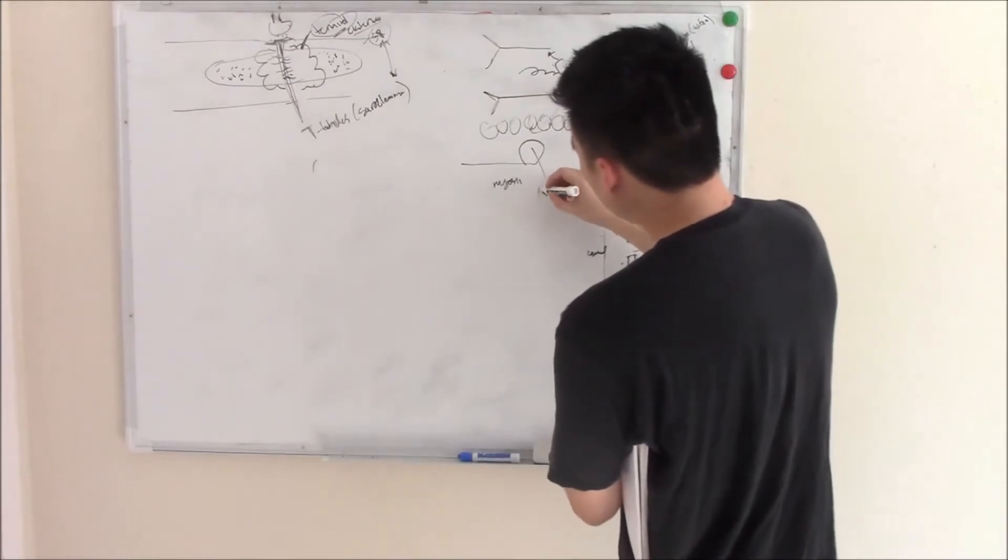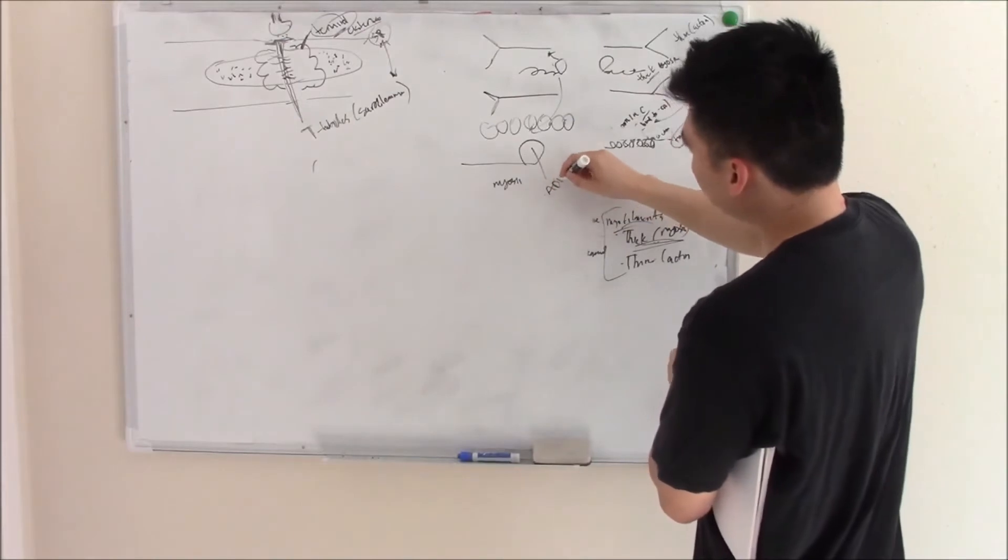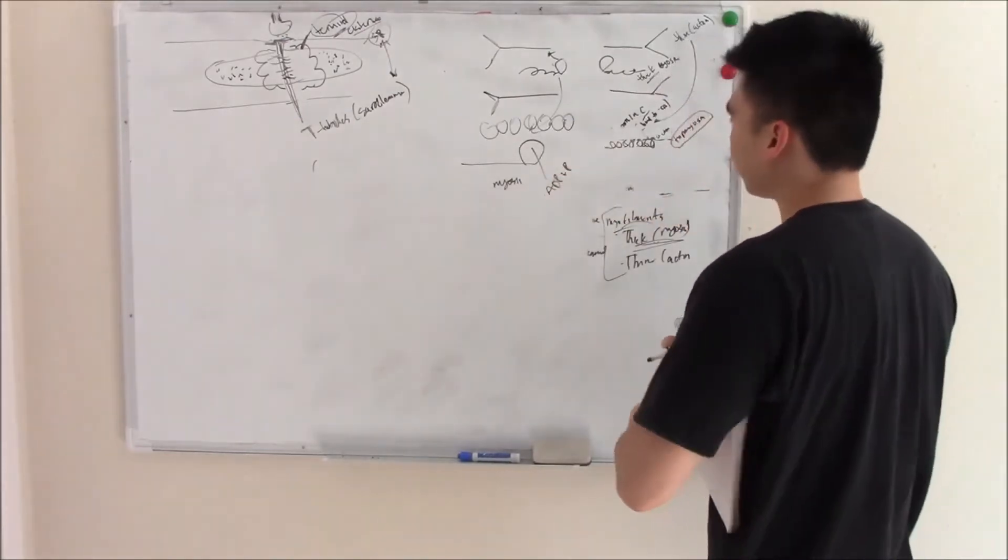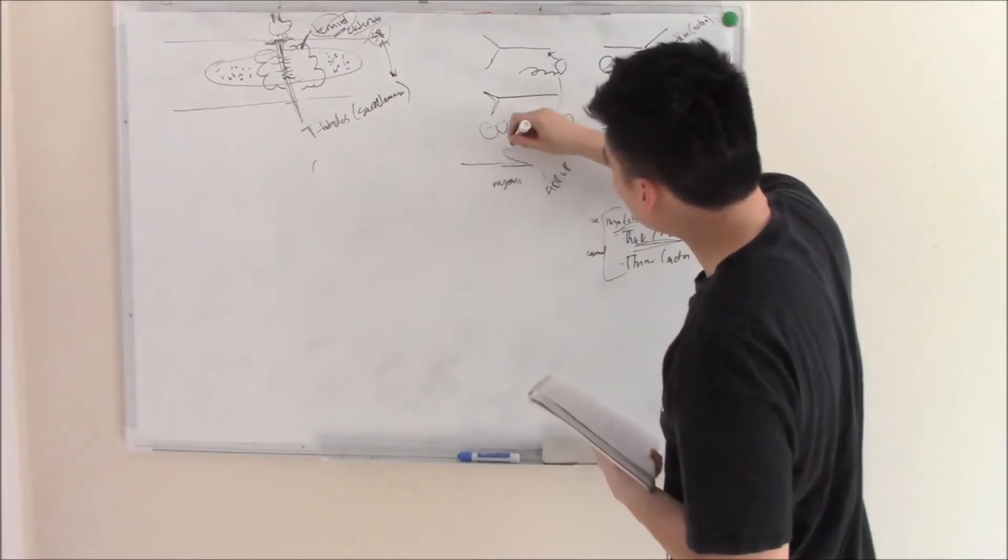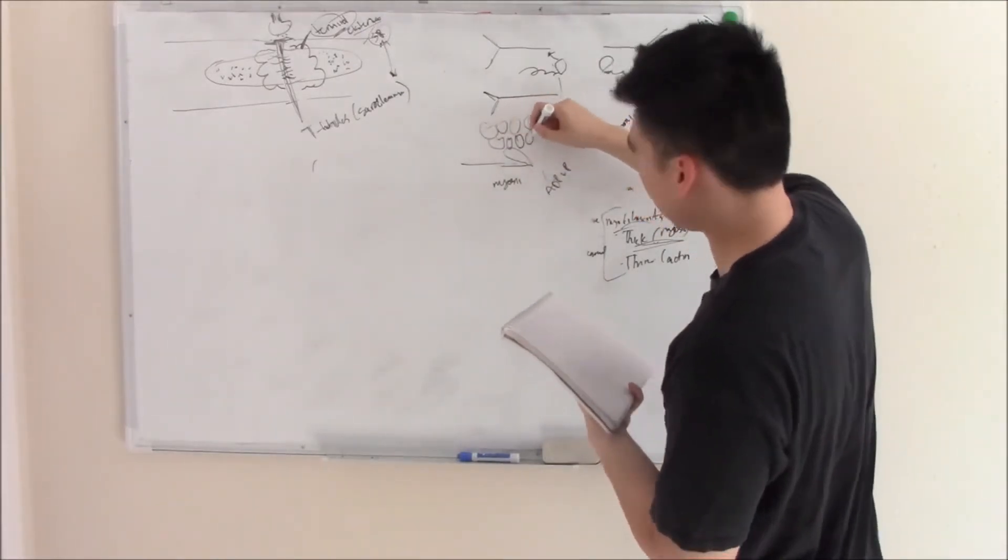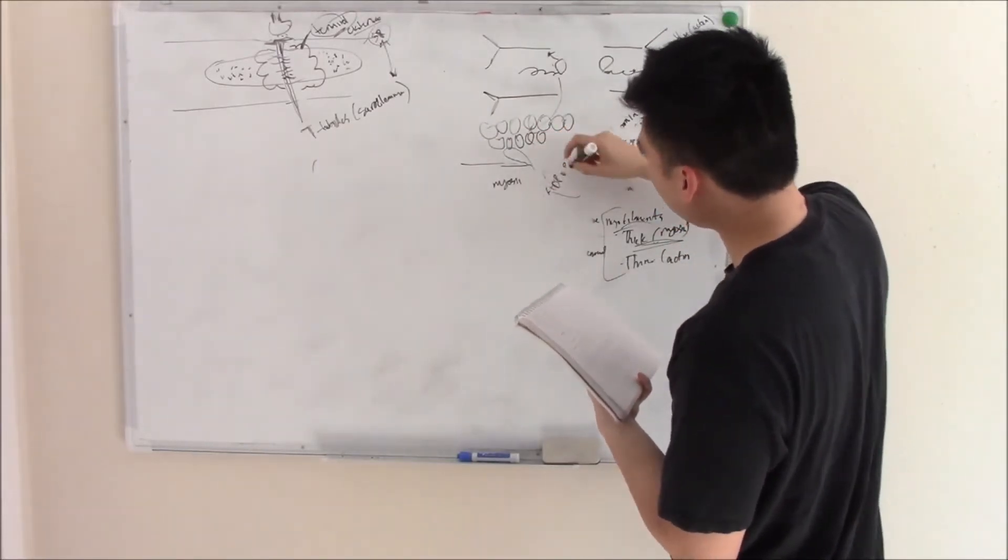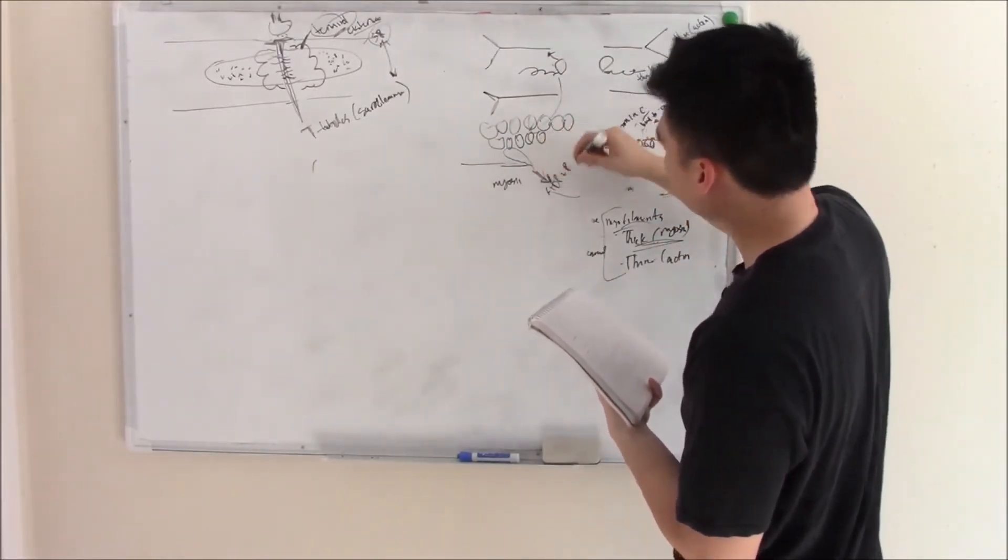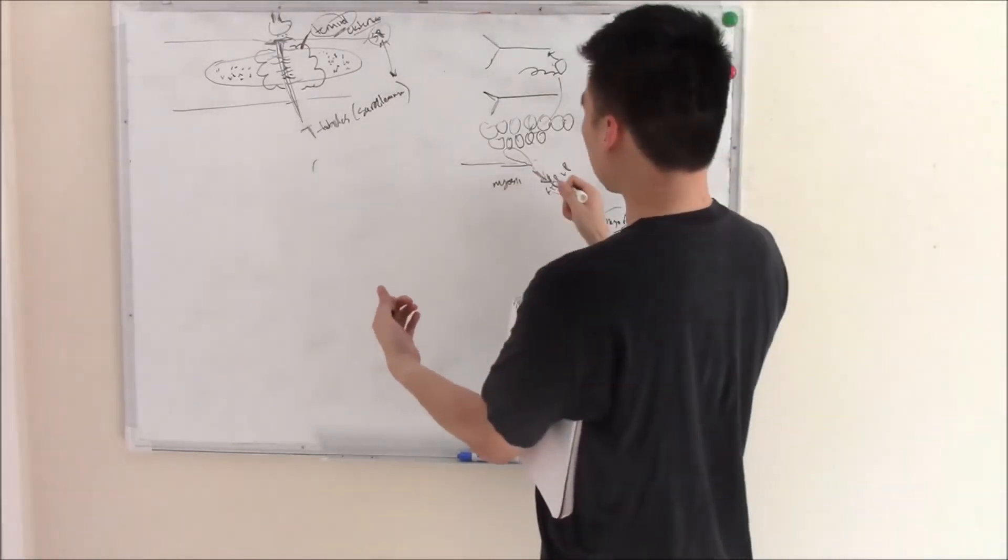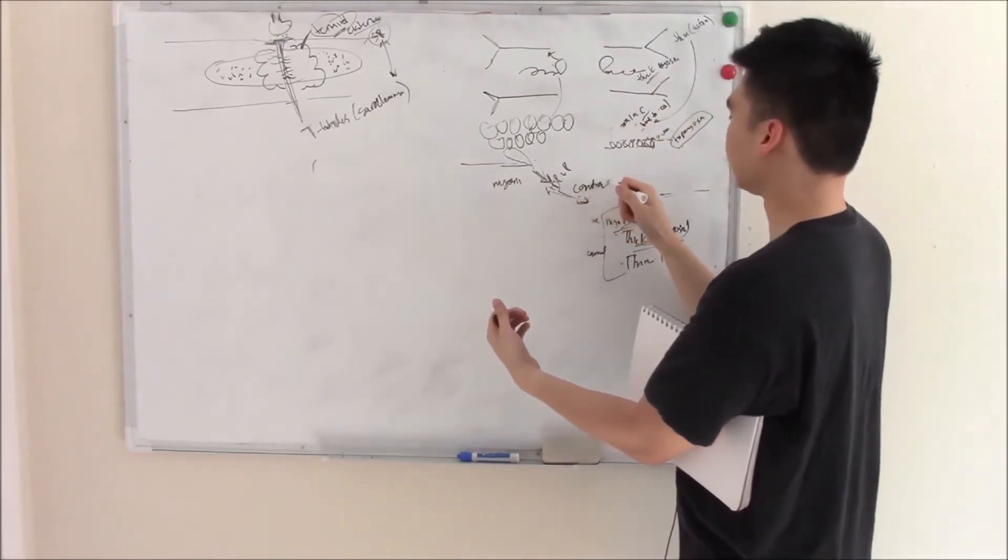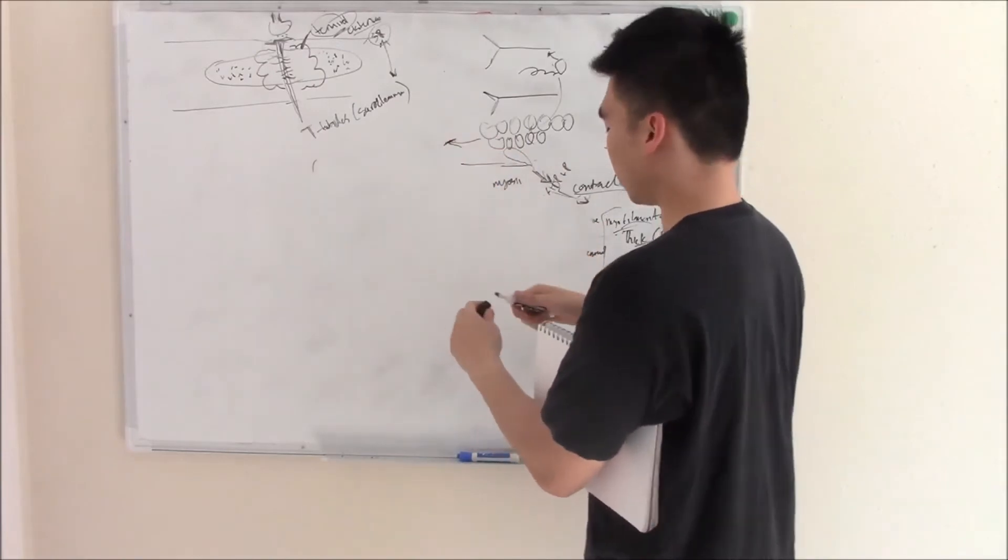ATP, if it's already on there, will hydrolyze and become ADP and phosphate. This primes your myosin. Now myosin can bind to actin, finally. ADP leaves, and when ADP leaves, myosin contracts and pulls actin into itself.